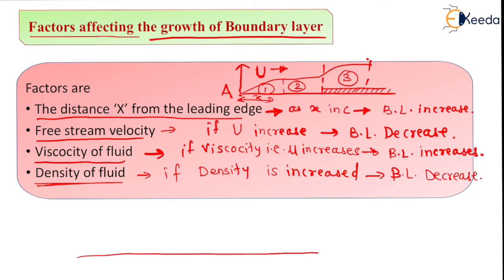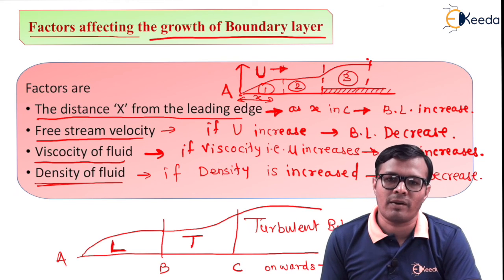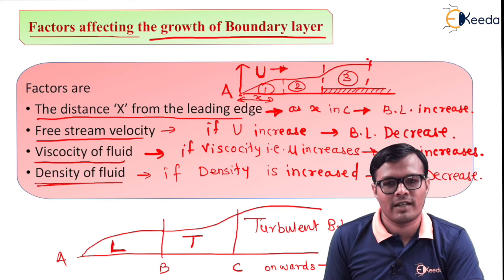We have seen that in this boundary layer, the zone from a to b is called the laminar boundary layer, from b to c is called the transitional boundary layer, and from c onwards it is called the turbulent boundary layer. We will see characteristics of each boundary layer one by one in next videos. That's all, thank you.